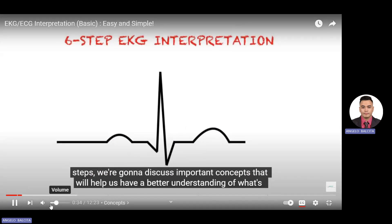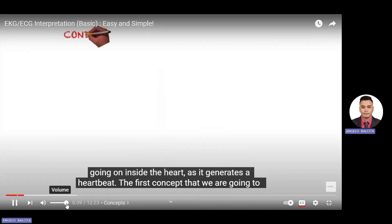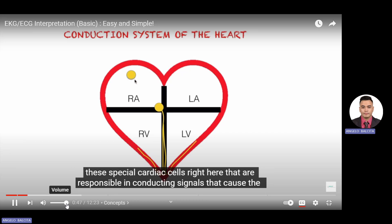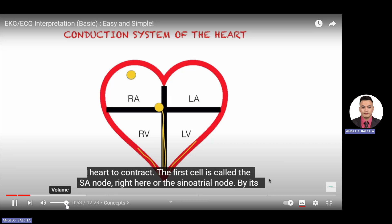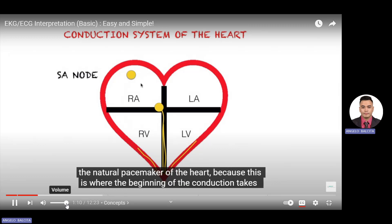We'll discuss concepts that will help us have a better understanding of what's going on inside the heart as it generates a heartbeat. The first concept is the conduction system of the heart — these are special cardiac cells responsible for conducting signals that cause the heart to contract. The first cell is called the SA node, or sinoatrial node, which is found within the right atrium. This is also known as the natural pacemaker of the heart because this is where the beginning of the conduction takes place.